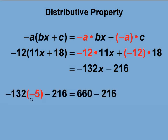We evaluate this expression for x equals negative 5, as shown here. We get 660 minus 216, which is 444.